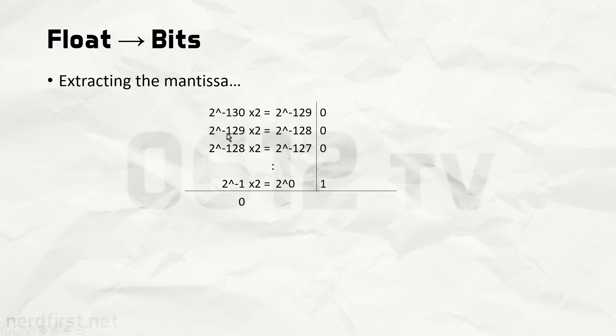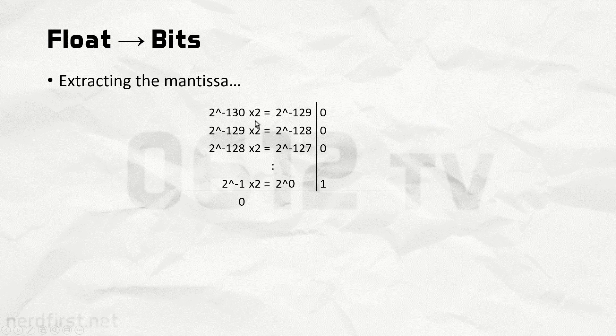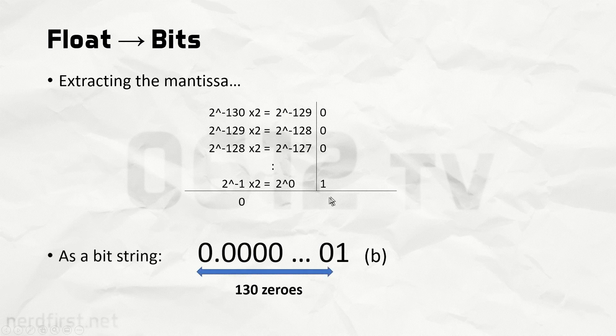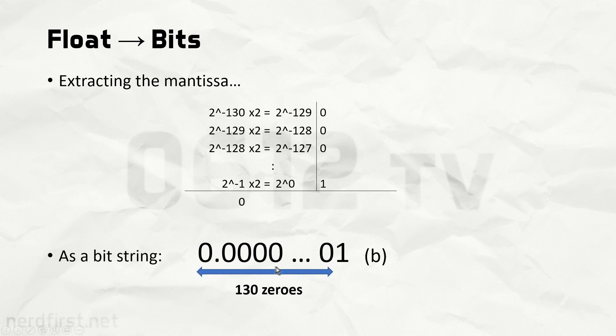Now, this one is particularly boring because we just keep on multiplying by 2 over and over again. We'll keep getting zeros until the very last attempt, where we will get a single one. The remaining value goes down to zero, and then we can finally stop. There are 130 multiplications in here. This of course gives us a final bit string of 130 zeros followed by a single one in binary.